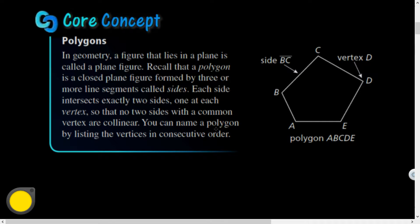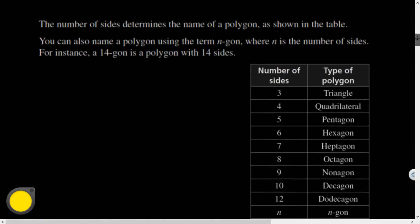One at each vertex, so that no two sides with a common vertex are collinear. So it wouldn't make sense if I had A, B, and C - I would not count that as multiple sides of a polygon. This is a three-sided polygon, not a four-sided one, just because I happen to have a point B in the middle.